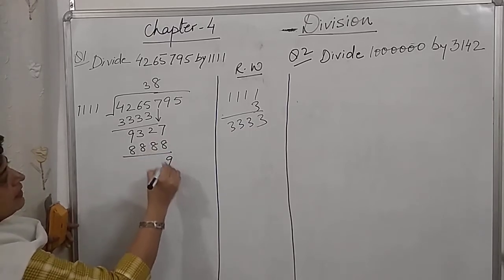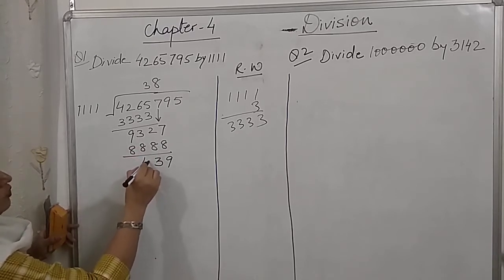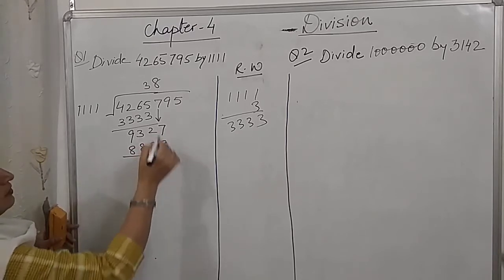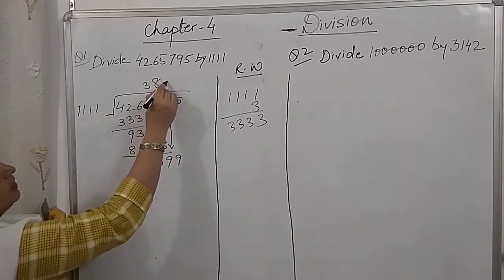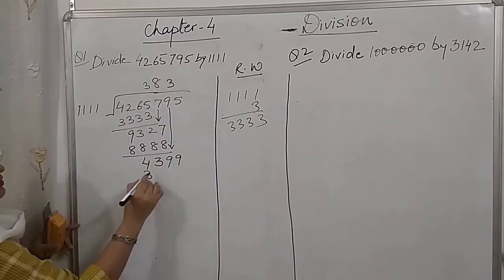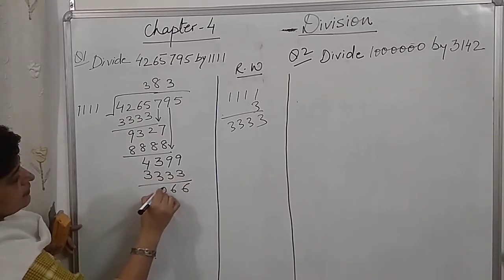17 minus 8, 9. 11 minus 8, 3. 4. That's it. So now we will take down this 9. This will go with 3, 3, 3, 3, 3, 6, 6, 0, 1.